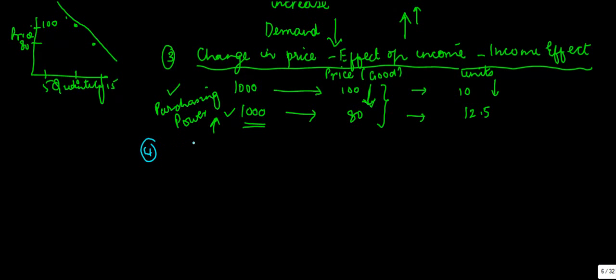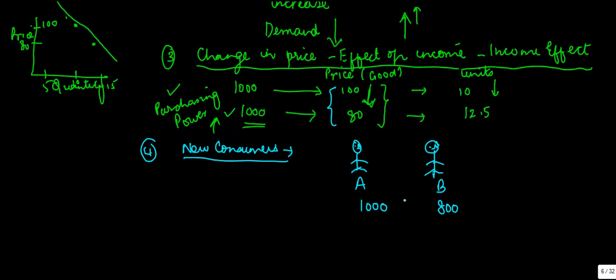Fourth reason: new consumers. Now what happened here is that let's say there were two people, A and B. A's income was 1000 rupees a month and B's income was 800. And let's say when the price was 100, A was able to buy 10 units.